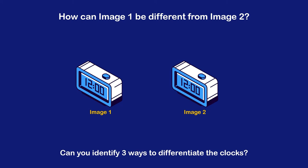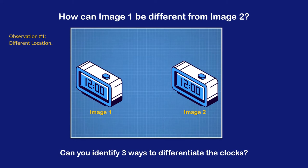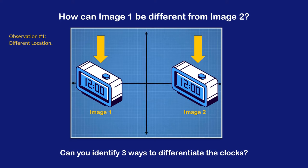How can image one be different from image two? Can you identify three ways to differentiate the clocks? Observation one: different location. One way is the positioning of each clock. For example, if we use a Cartesian plane, you can see the clocks are at two different coordinates.